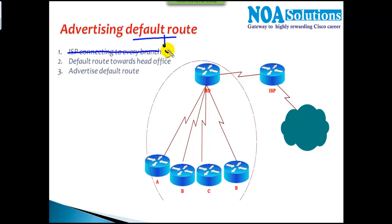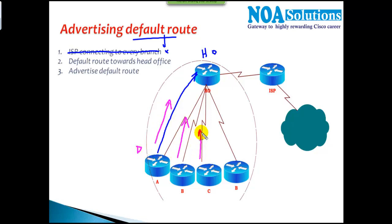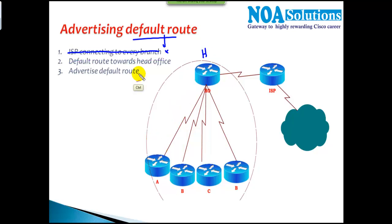You might think of configuring a separate default route on each branch pointing toward the head office. However, that option can create routing loops, which we generally don't want. So we're not going with a separate ISP connection at each branch, and we're also not going with a separate static default route pointing toward the head office.